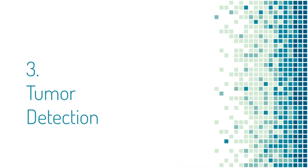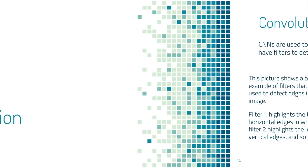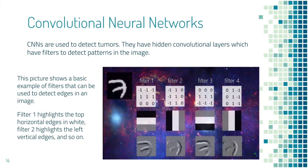Next, I will be talking about how neural networks can be used in tumor detection. A convolutional neural network is used in image classification and therefore can be used to detect tumors. The convolutional layers have filters which detect patterns in the images, for example shape, color, brightness, texture, and edges.